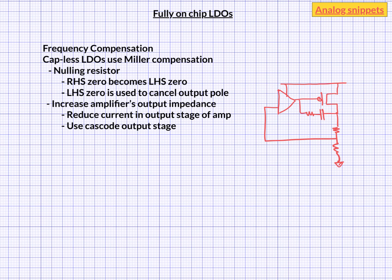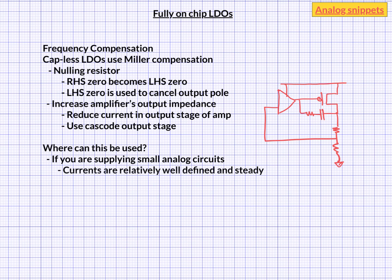These things have their own disadvantages, but in some applications it's fine. For example, if you are driving small analog circuits, you don't need to do much more than just this. Small analog circuits have many good things going for them — there are no sudden demands in current, and current is relatively well-defined. But the circuit will struggle if there are sudden large changes in the output current. In such conditions the LDO needs to respond fast, and reducing output current is not going to help with that.